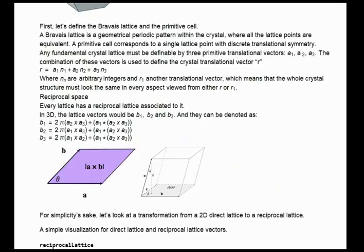Every lattice has a reciprocal lattice associated to it. In crystallography terms, the reciprocal lattice is the diffraction pattern of a crystal. Or in quantum mechanics, it's described as k-space, with k being for k-wave vectors. In a 3D lattice, the vectors would be b1, b2, and b3.